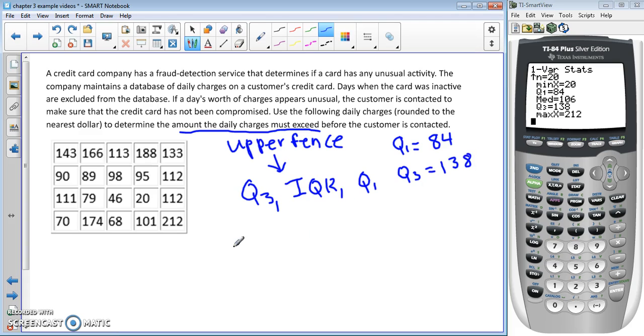Now let's find our upper fence. The upper fence is going to be Q3 plus 1.5 times the IQR. We need to find IQR first, which is going to be 138 minus 84.